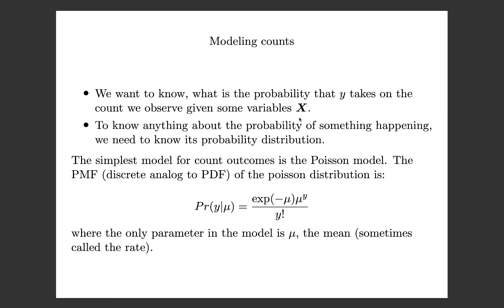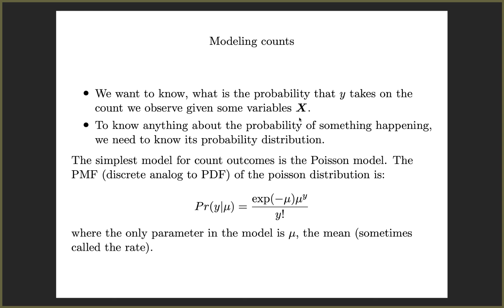Because we have non-negative integer values, we don't necessarily want to know the predicted value — we want to know the probability that Y takes on the count we observe, usually given some set of variables. Unlike the linear model where we could predict any value, here predicted values have to be non-negative integers. If we want to know the probability with which something happens, we need a probability distribution, and for count data the simplest one is called the Poisson distribution.